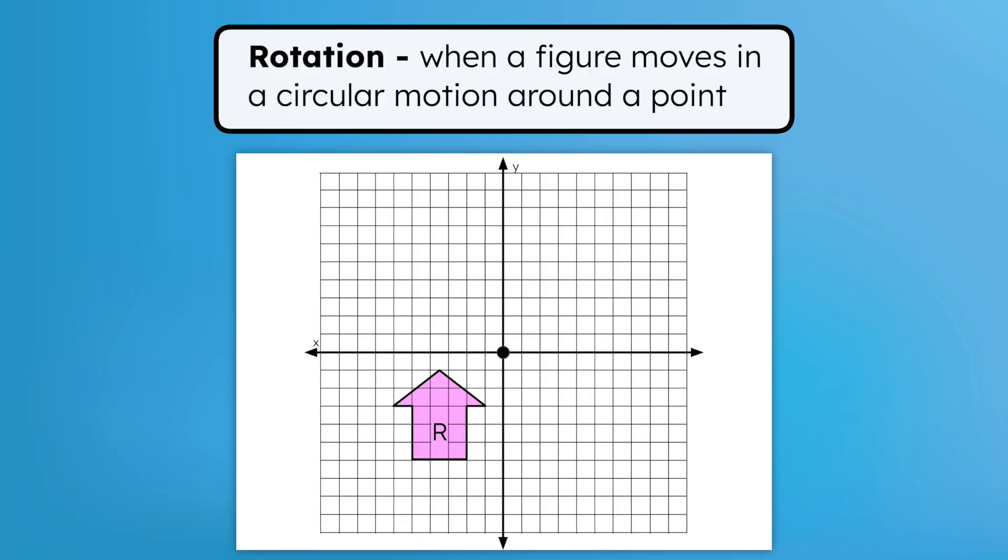Let's use figure R to demonstrate rotation around the origin. When rotating, the distances of each point will always be the same distance from the origin. The origin is like the center of the fan. The figure rotates around the origin, just like the blades of a fan rotate around the center of the fan.